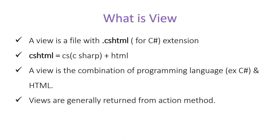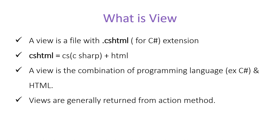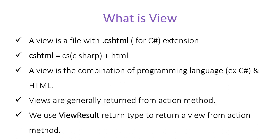Views are generally returned from action methods. Suppose we send a request from the browser to our ASP.NET Core MVC application. That request goes to the HTTP pipeline, then directly to a controller, and inside the controller the request goes to an action method. To maintain the flow of the application, we must return the view from the action method, so we write code inside the action method to return a view so we can see output on the browser.